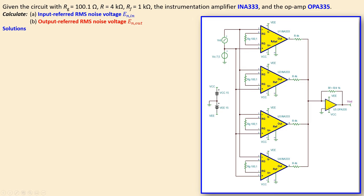What we have is the following circuit. We see four identical instrumentation amplifiers. The gain-setting resistor is 100.1 ohms. We have the differential input voltage and the common mode input voltage to set the circuit running. It's supplied by +15 and -15 volts. We also have an inverting summing amplifier with resistors of 4 kilo-ohms each, and a feedback resistor four times smaller than the input resistance, which creates the averaging.